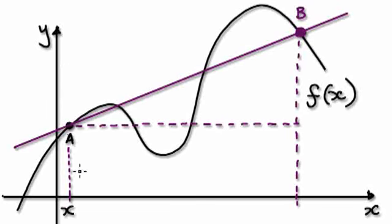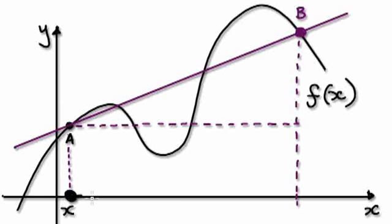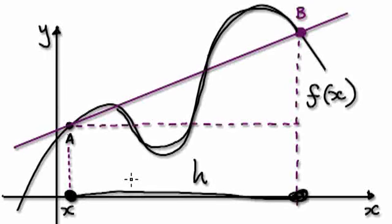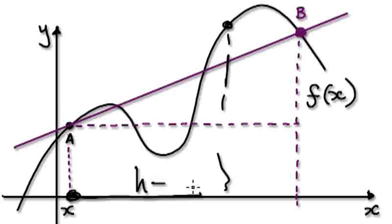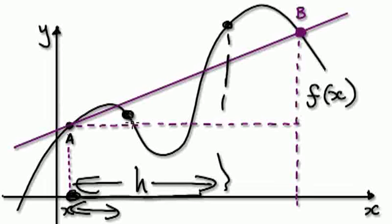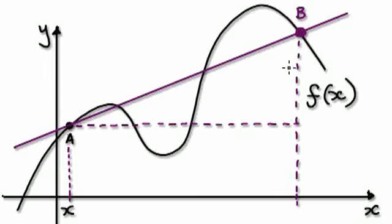Let's say this point is at x. The way we get B to move closer and closer towards a is to call this length here h. The way we get B to move closer towards a is to decrease h each time. So if you want to move B to here, you would set up h to be this length here, and then later on decrease h. Let's just call this length here h.